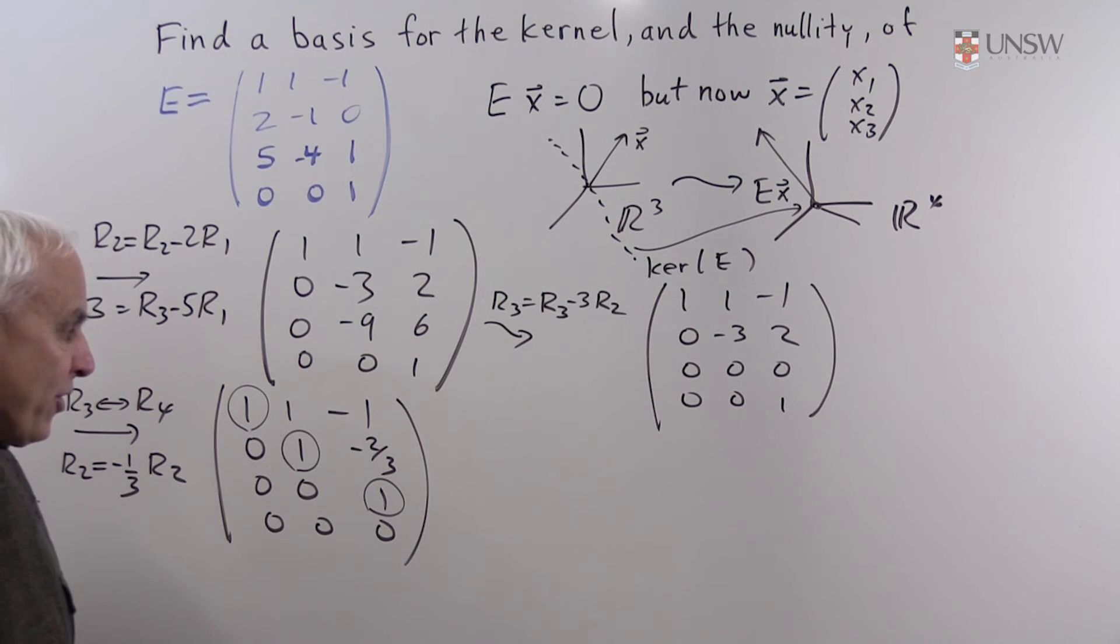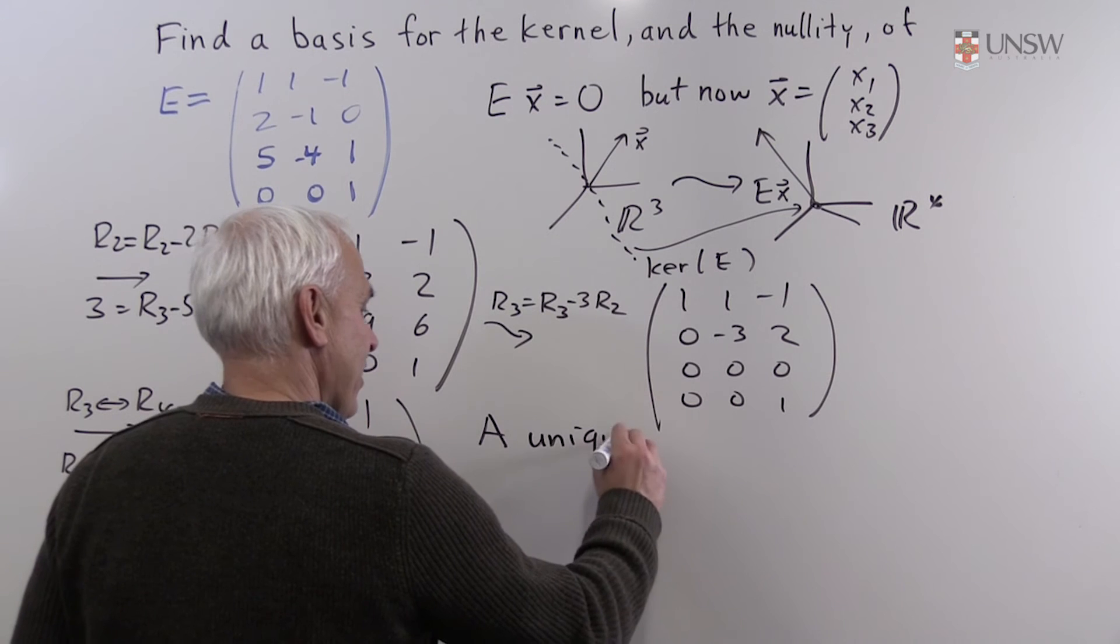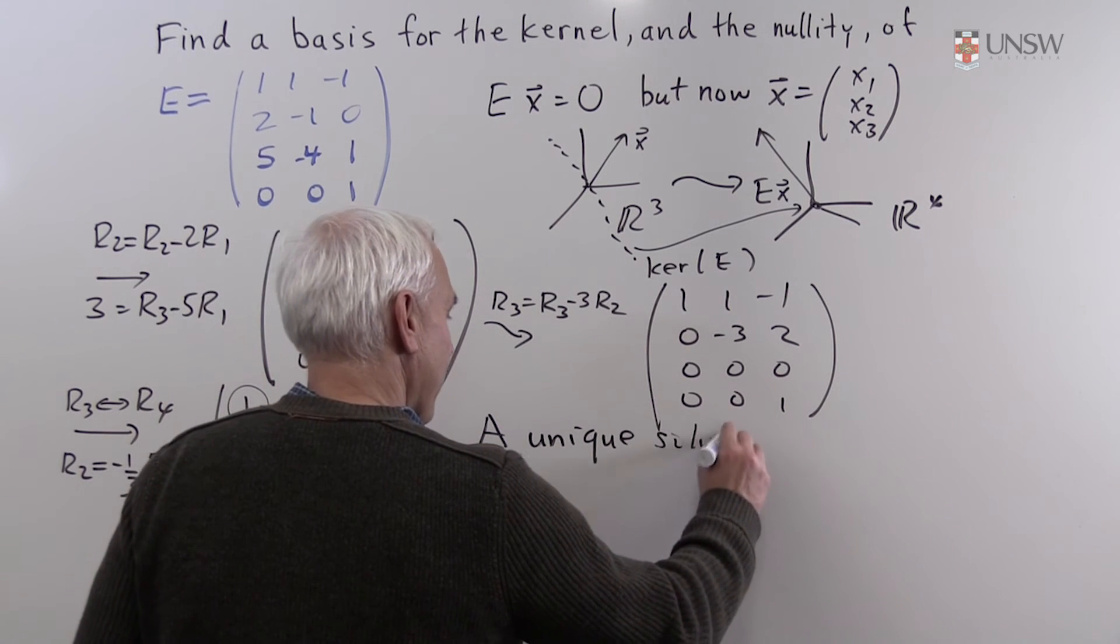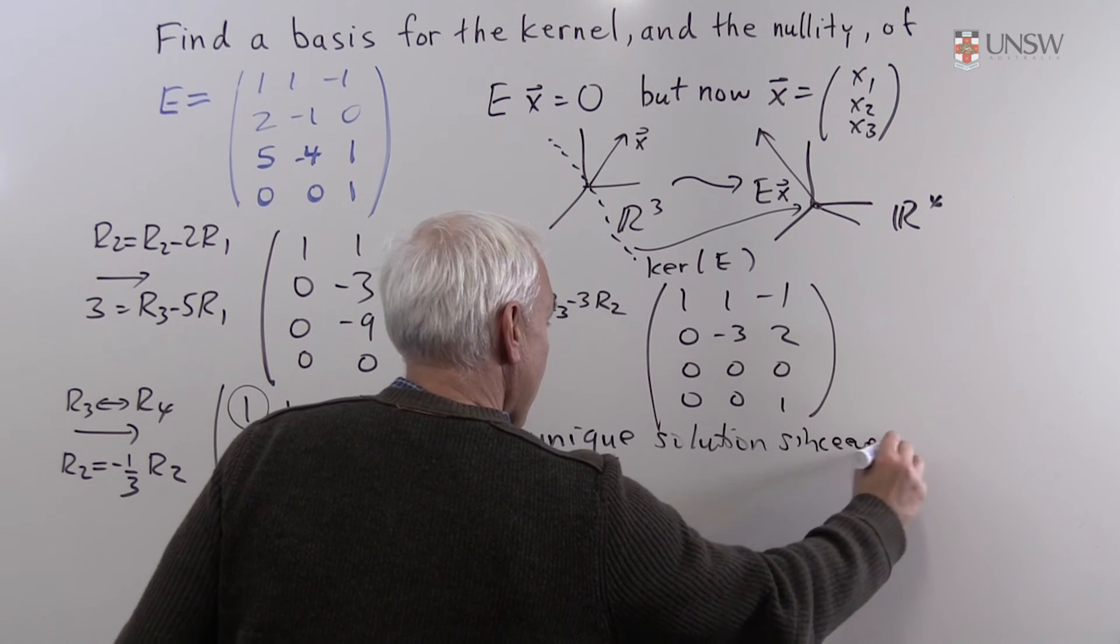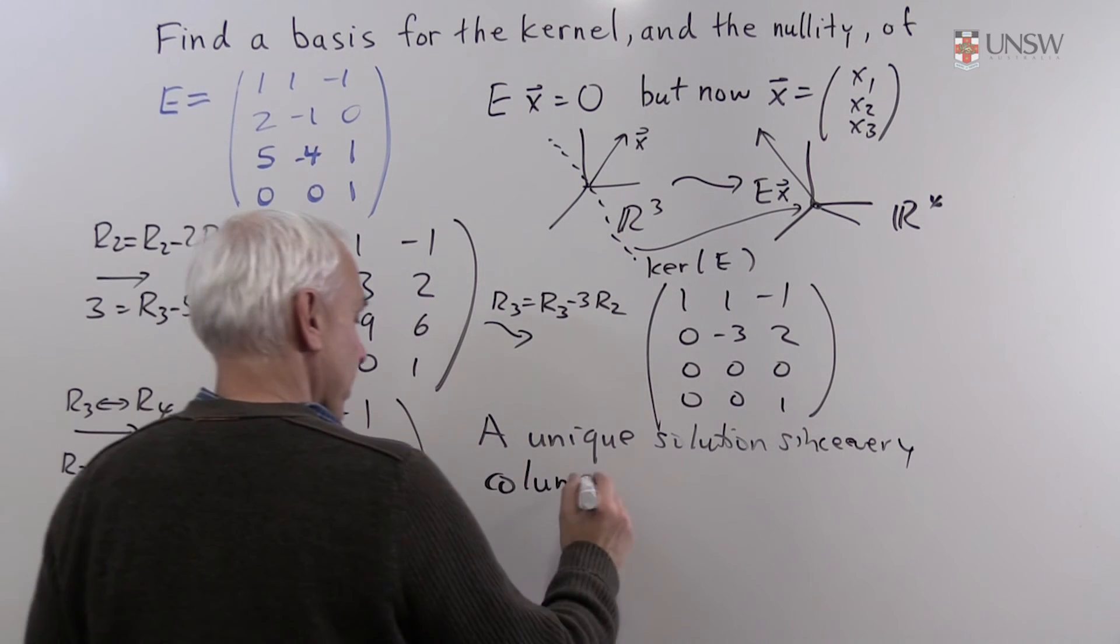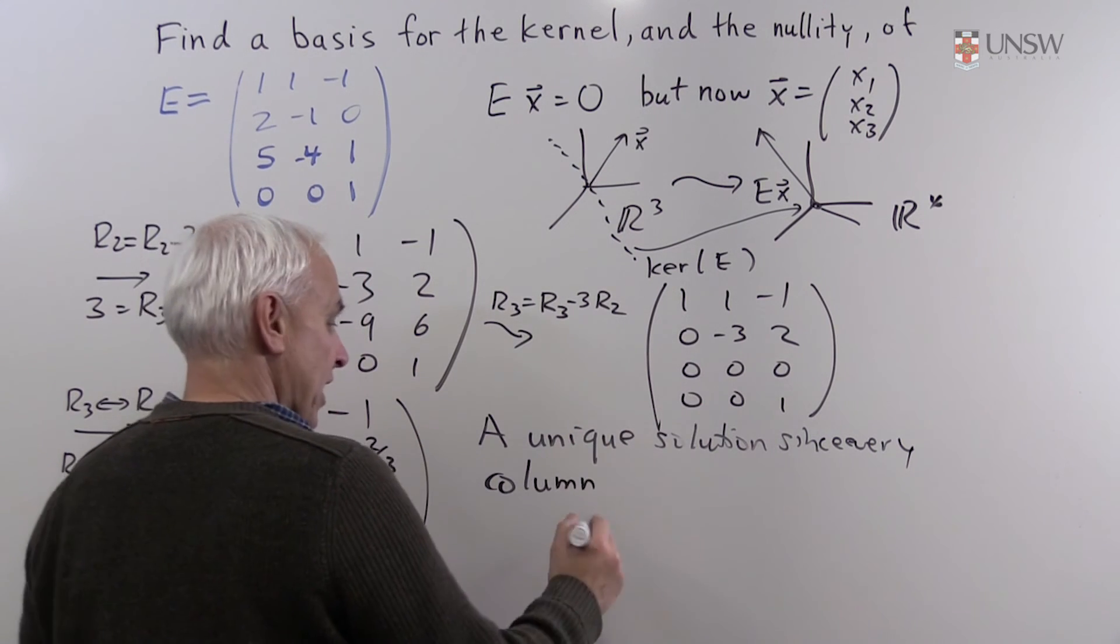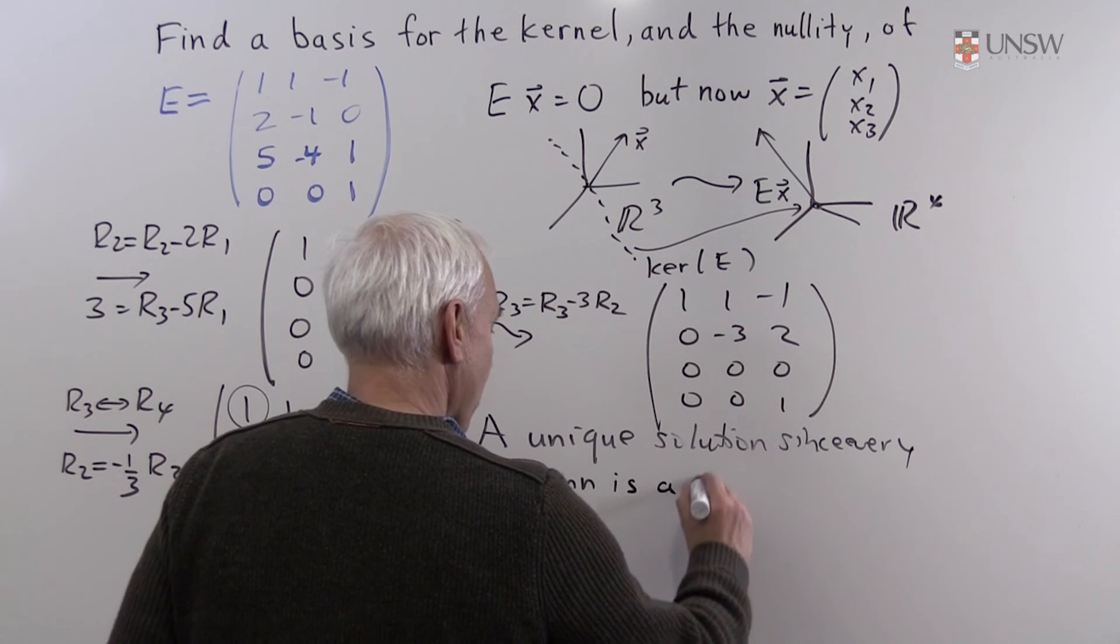So there's a unique solution. A unique solution since every column in the matrix is a pivot column.